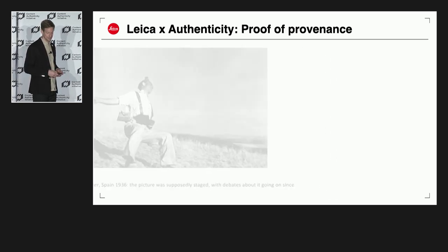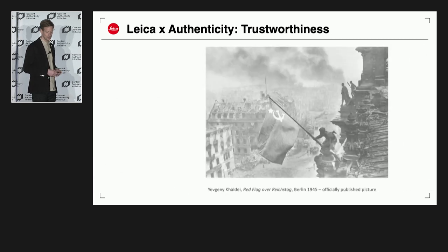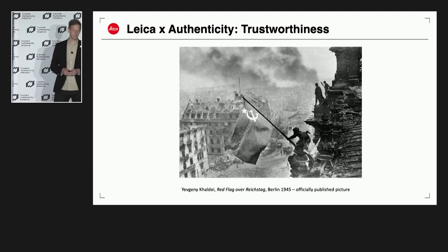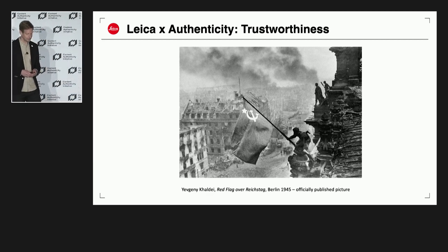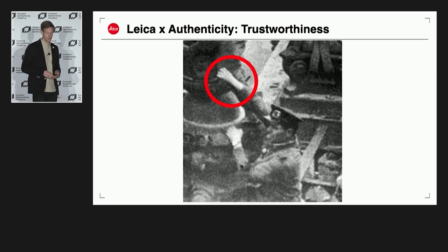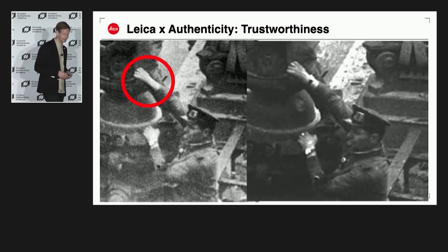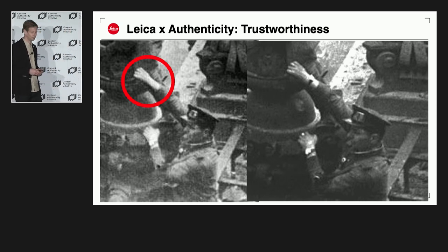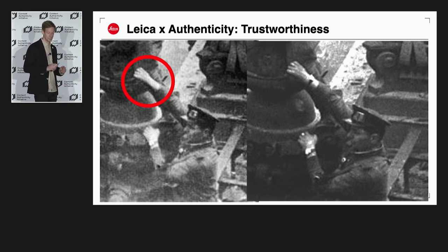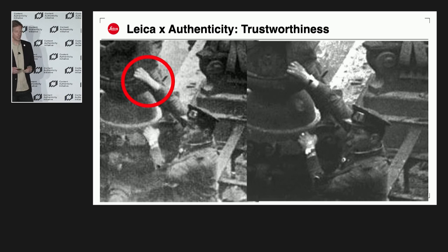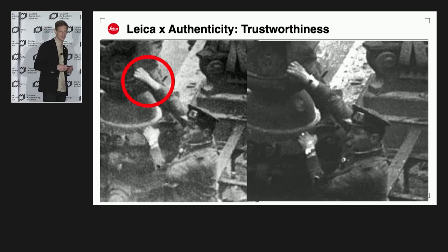Another quite famous example where image manipulation was a topic is the picture symbolizing the end of the Second World War, called 'Red Flag over the Reichstag' by Evgeny Khaldei. This was also published in a manipulated way — there was a soldier on it wearing two watches, which could lead to the assumption that there had been looting going on. Before it was published, that watch was retouched. I'm showing this because it's a good example that image manipulation has even been a topic in analog photography, which is said to be really authentic and hard to manipulate.